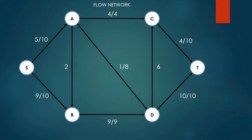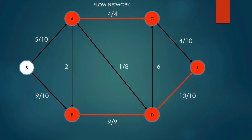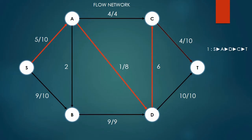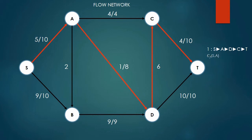Looking back at the flow network, we can see that edges D to T, B to D, and A to C are fully saturated. We now have to look at the next shortest path from source to sink, which corresponds to S to A, A to D, D to C, and C to T. The minimum weighted edge is S to A, which has a maximum flow of 5. We update the flow network, adding 5 to each edge: S to A is now 10 over 10, A to D is 6 over 8, D to C is 5 over 6, and C to T is now 9 over 10.